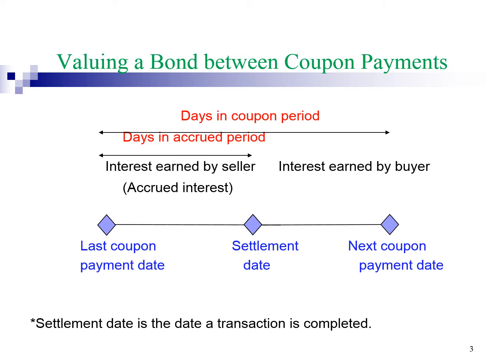This diagram gives an overview of the dates. Here we have three dates: last coupon payment date, next coupon payment date, as well as settlement date. Settlement date refers to the day when the buy and sell transaction is completed. Before the settlement date, the seller is entitled to the coupon interest. After the settlement date, the interest is earned by the buyer.